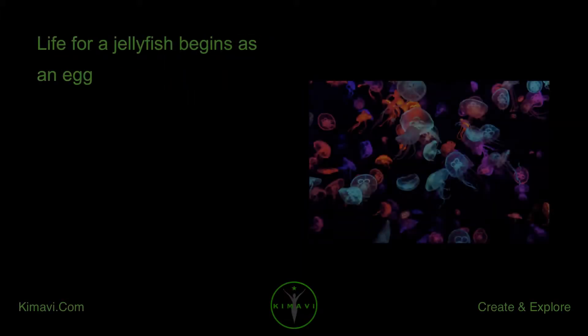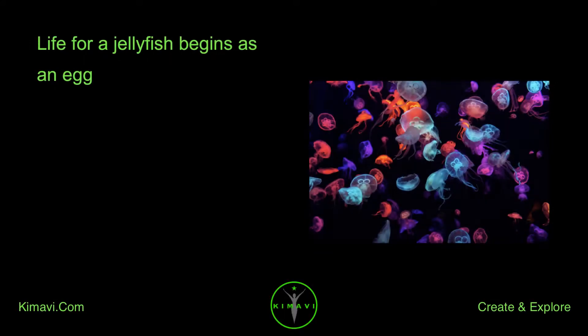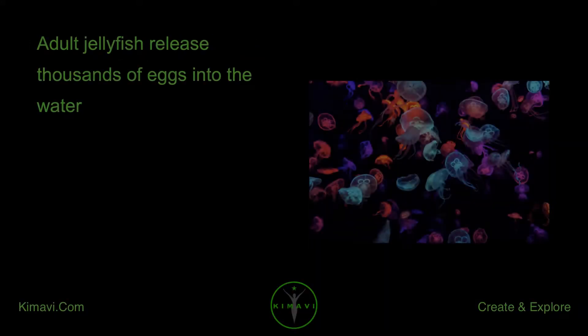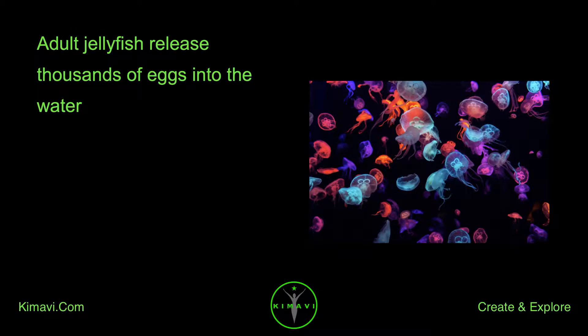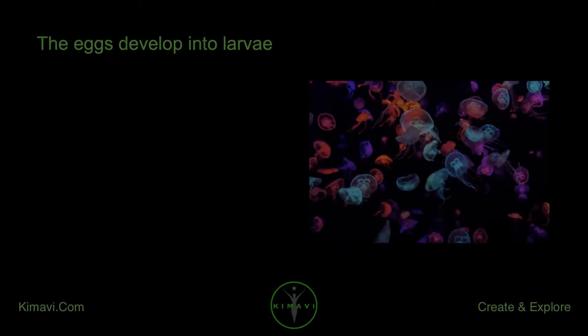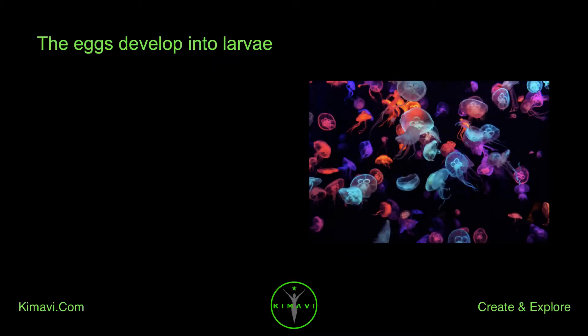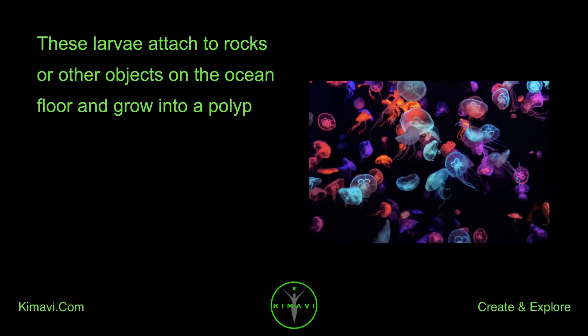Life for a jellyfish begins as an egg. Adult jellyfish release thousands of eggs into the water. The eggs develop into larvae. These larvae attach to rocks or other objects on the ocean floor and grow into a polyp.